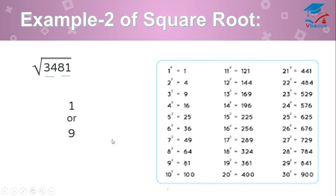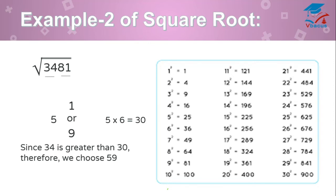Now, choose for the tens number. See the 34. Where does it fall? 34 falls in between 25 and 36. Choose the smaller one. Square root of 25 is 5. And multiply 5 to its next number. 5 times 6 are 30. And compare 34 and 30. Since 34 is greater than 30, therefore, we choose 59.